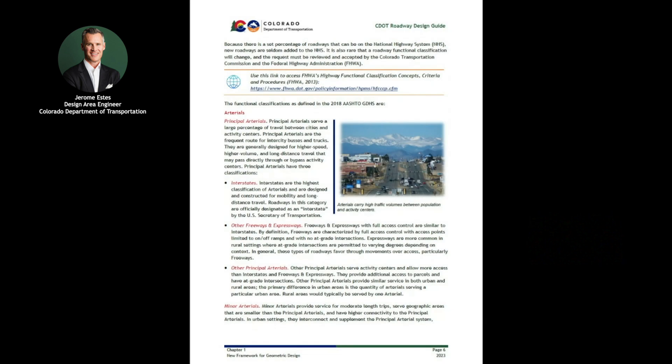The functional classifications presented are those carried forward from past versions of the Roadway Design Guide and as they are defined in the 2018 AASHTO Geometric Design of Highways and Streets. An understanding of functional classifications from the past will allow engineers and designers to move into defining the contextual area or context classification of the project.